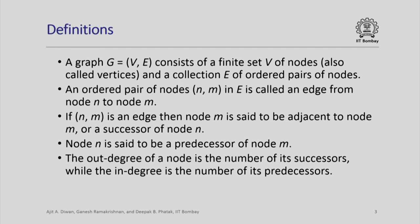Node m is like a next node of n, but n can have any number of successors, and they are defined by the set of edges in the graph. Similarly, node n is said to be the predecessor of node m, or the previous node of m. Again, m can have any number of predecessor nodes, and which nodes are predecessors or successors is defined by the set E of edges in the graph. The set V defines what are the nodes in the graph and the set E defines the ordered pairs which define which nodes are successors of which nodes.